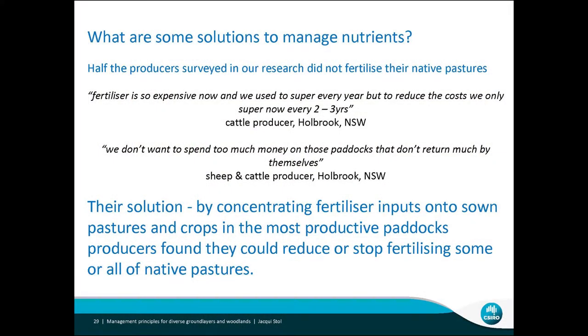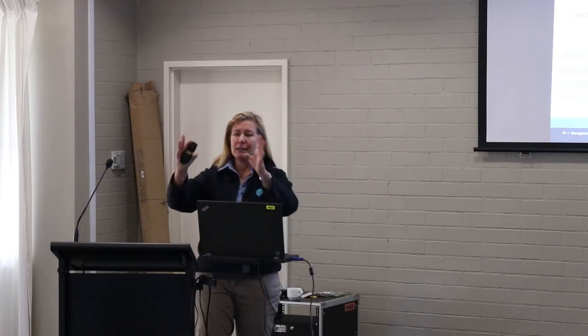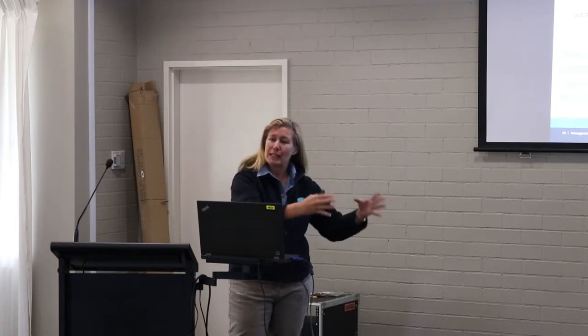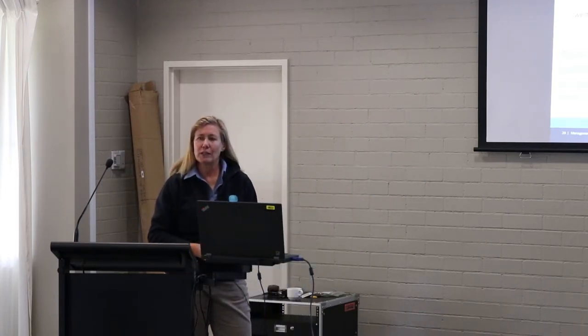What are some of the solutions to manage nutrients? In our work for 'Biodiversity in the Paddock,' half of the producers didn't fertilise their native pastures — partly for economic reasons, it is expensive. A lot of people do fertilise less every two to three years. It's about knowing what you've got: do you have a highly diverse native pasture, or something with native perennial grasses and sown species that will respond to fertiliser without impacting diversity?